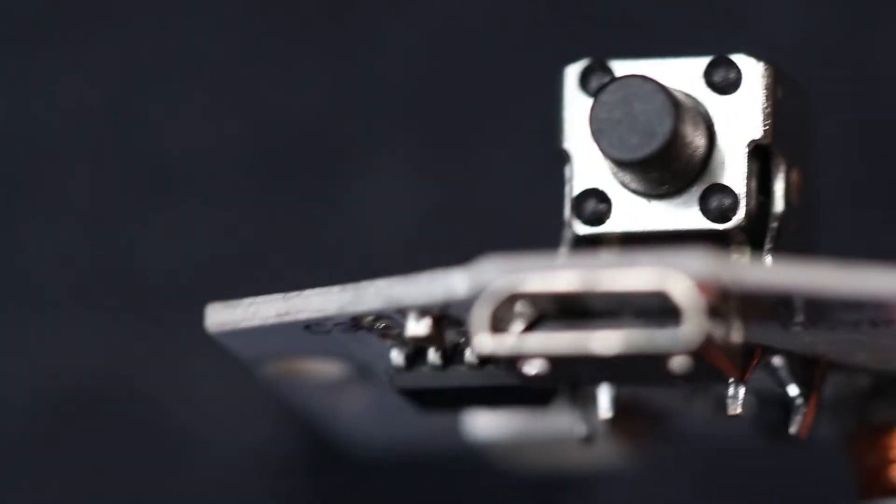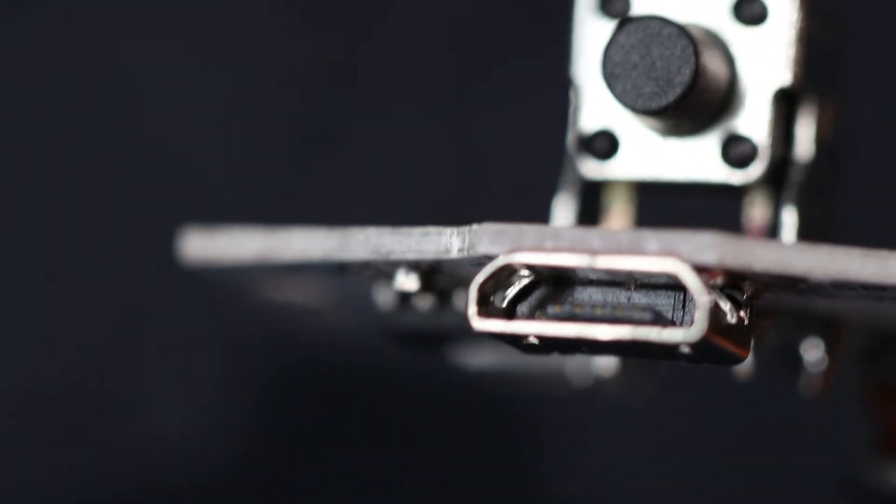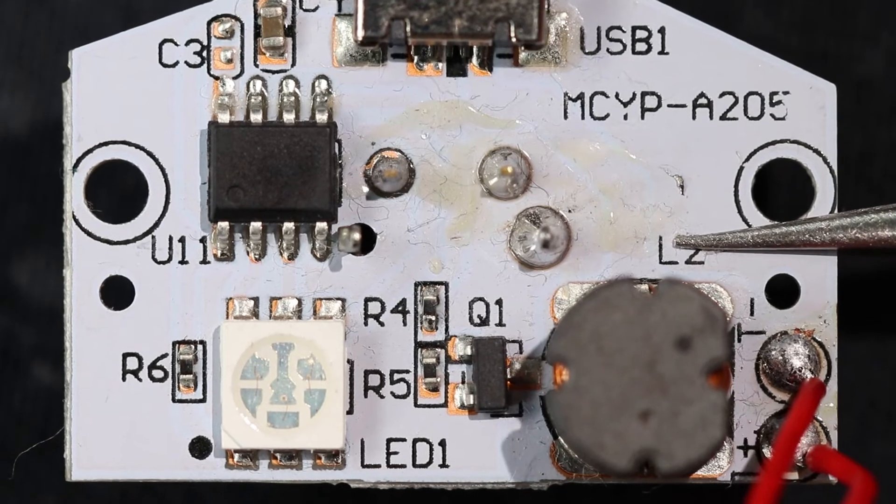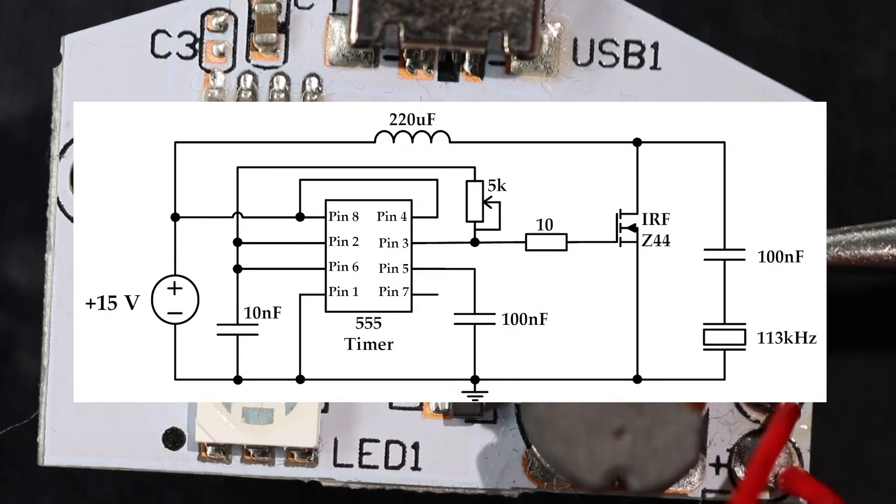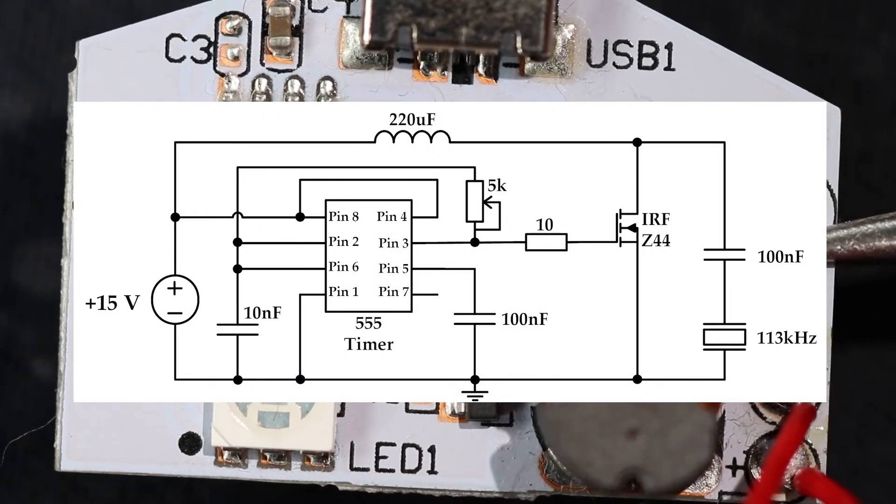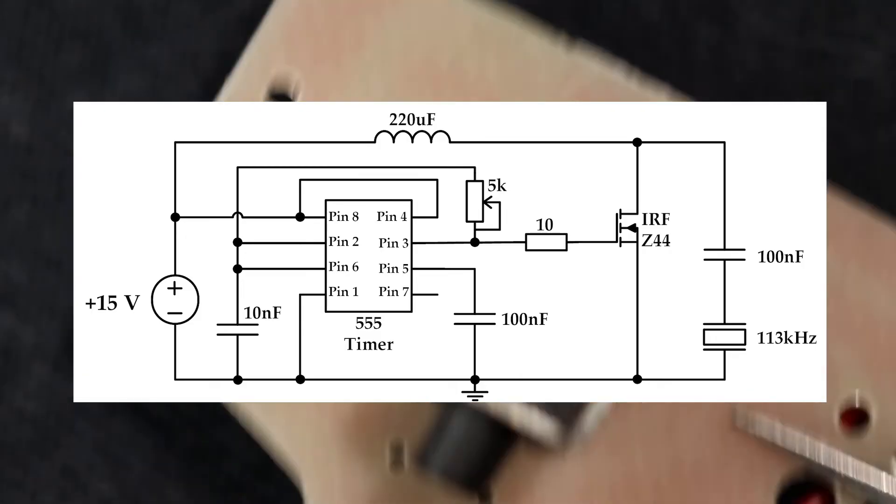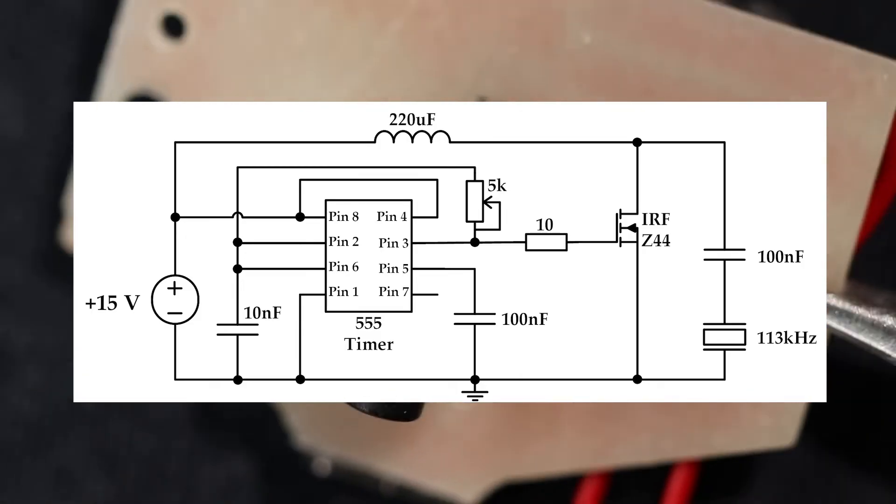Now, let's have a look at the electronics part. As you may have guessed, responsible for the control is this board, which has the following schematic. The control circuit is based on a 555 timer. The timer generates pulses at the gate of the transistor with a specific frequency, forcing piezo element to vibrate.